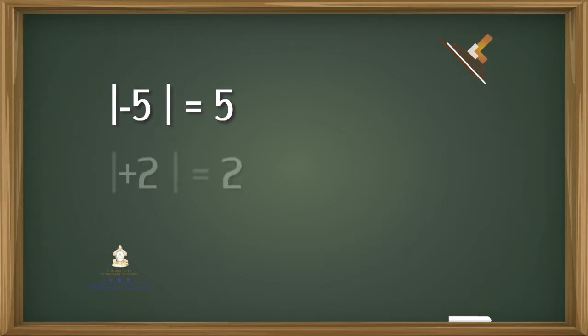En este caso, primero encontramos los valores absolutos: de negativo 5 que es 5, y de positivo 2 que es 2. Luego restamos dichos valores absolutos. Para colocar el signo correcto, comparamos cuál de los dos valores absolutos es el mayor.